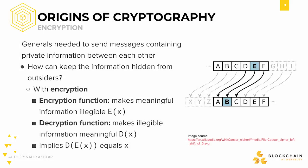Before we talk about the specifics of cryptography, let's go over some situations which gave birth to the field of cryptography. A famous example you might be familiar with is the Caesar cipher. Julius Caesar, a famous leader and general of the Roman Empire, would often send messages with sensitive information to his fellow generals, such as information about an impending attack from an enemy.